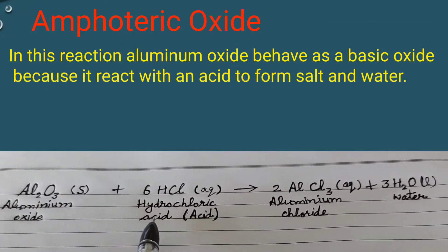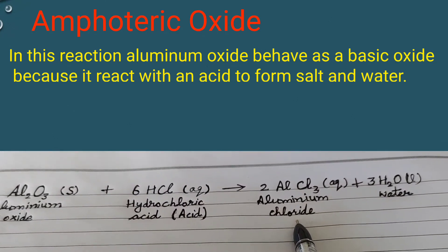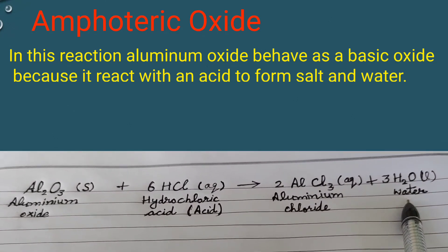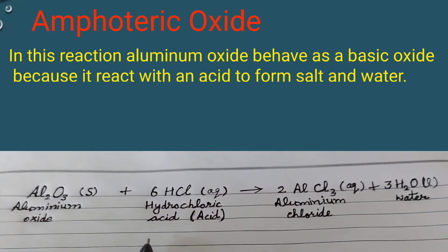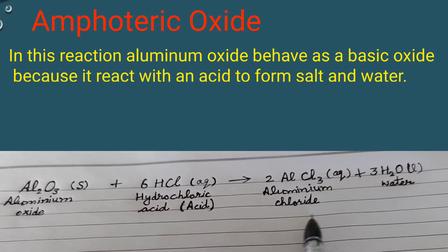Aluminium oxide reacts with hydrochloric acid and makes aluminium chloride and water. In this reaction, aluminium oxide reacts with hydrochloric acid and forms salt and water.